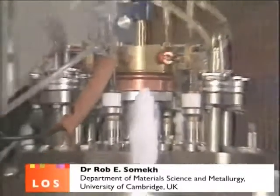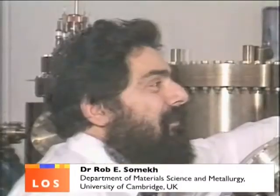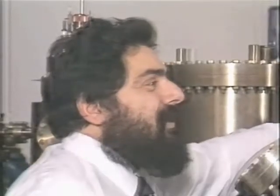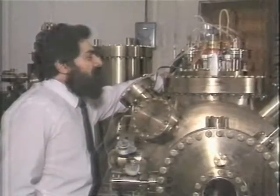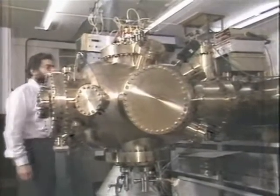The magnificently named sputter deposition machine is being used by Dr. Rob Somek to fire individual yttrium and barium atoms at a tiny piece of sapphire inside to build up a superconductor atomic layer by atomic layer.